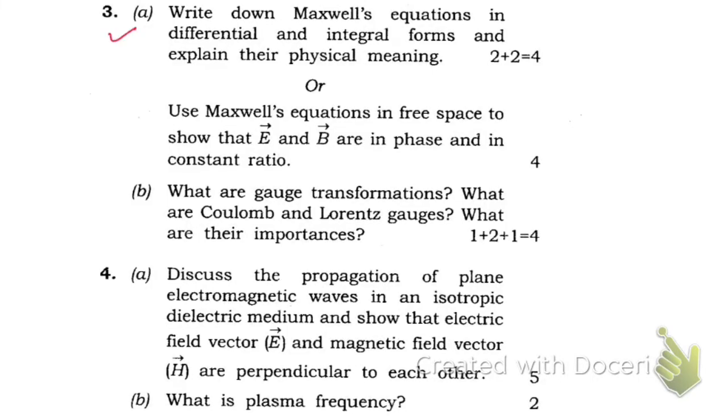Question number 3a: Write down Maxwell's equations in differential and integral form and explain their physical meaning. Or you need to answer either this one or this one: Use Maxwell's equations in free space to show that electric field E and magnetic field B are in phase and in constant ratio.